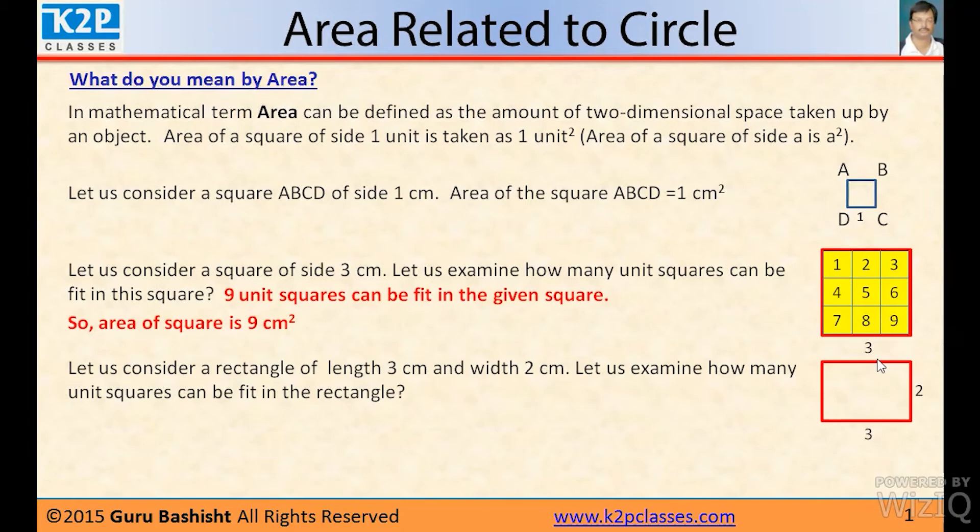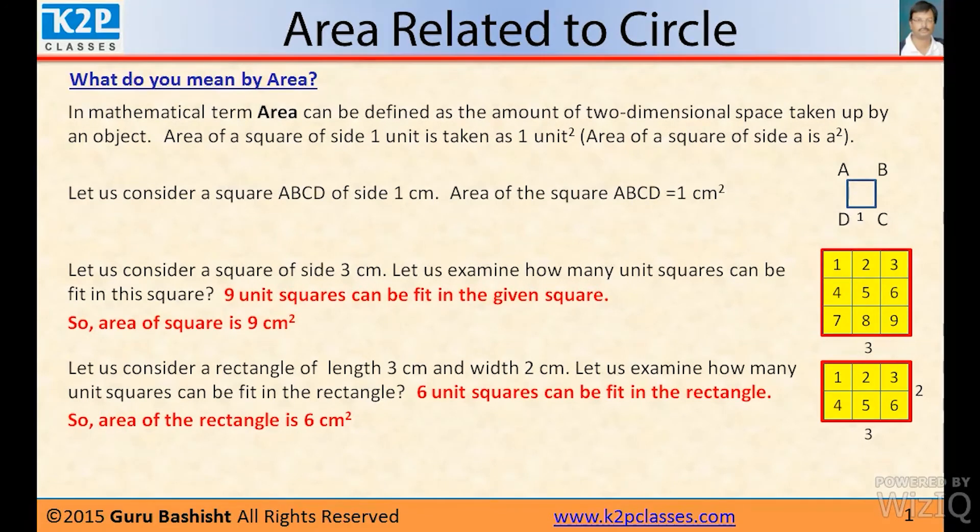Let us consider a rectangle of length 3 cm and width 2 cm. Let us examine how many unit squares can be fit in the rectangle: one, two, three, four, five, six. Six unit squares can be fit in the rectangle. So area of the rectangle is 6 cm².